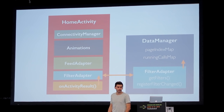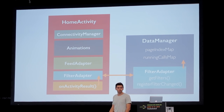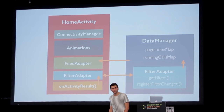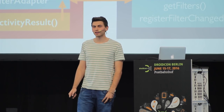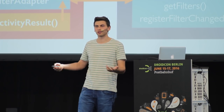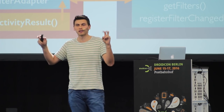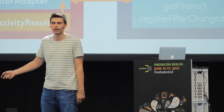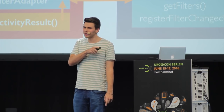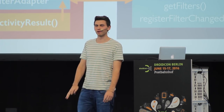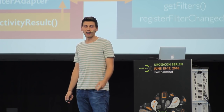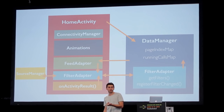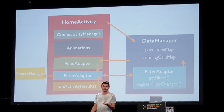The FilterAdapter is connected directly to the DataManager. The DataManager is connected to the FeedAdapter. The FeedAdapter is connected to the FilterAdapter. And the FilterAdapter is connected to the SourceManager which stores sources in SharedPreferences. You see the problem — all these arrows pointing around, and the HomeActivity also knows the DataManager because it has to cancel it in onDestroy.